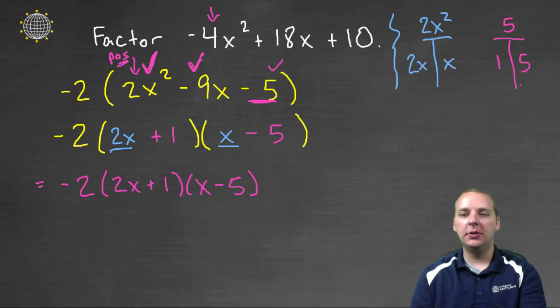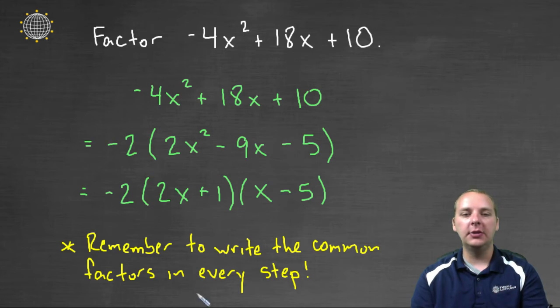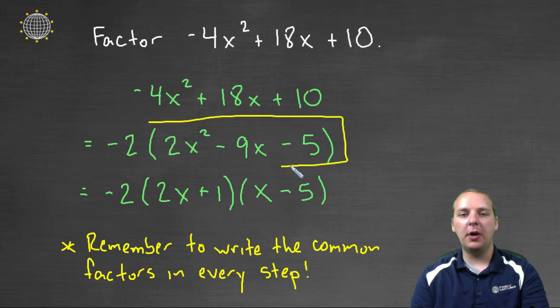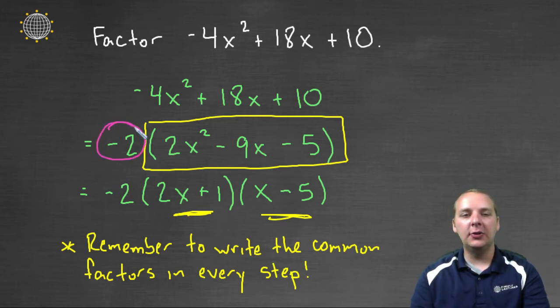Now one last thing I want to mention before I let you go is a very common mistake that a lot of students make. Here I've rewritten all the steps again. We had our polynomial, we factored out the -2, and then we focused our attention just on this polynomial. Well what a lot of students will do is they'll get so focused on factoring this quadratic, and maybe they'll even factor it. But here's what they'll forget.